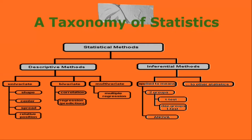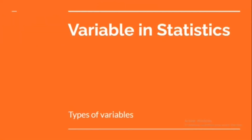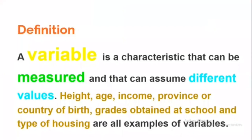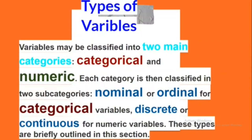Statistical description of data: a variable is a characteristic that can be measured and that can assume different values. Height, age, income, province or country of birth, grades obtained at school, and type of housing are all examples of variables. Variables may be classified into two main categories: categorical and numeric. Each category is then classified into two subcategories — nominal or ordinal for categorical variables, and discrete or continuous for numeric variables.